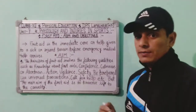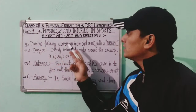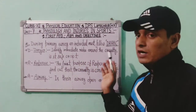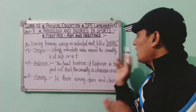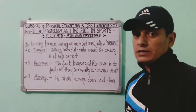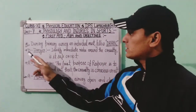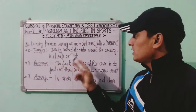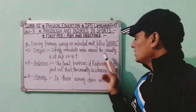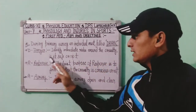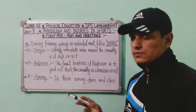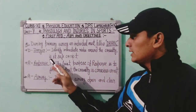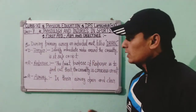During a primary survey, an individual must follow DRABC. The first letter is D, which stands for Danger. We must identify the immediate risk around the casualty — is it safe or not? First, we identify the risk around the casualty immediately.